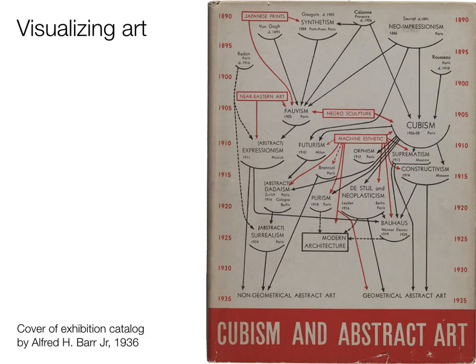Another example from data visualization history is this cover of an exhibition catalogue, which visualizes a range of art movements before and after cubism. It's a mixture of a directed network diagram blended with a timeline — the vertical axis is a timeline promising an overview of the main art schools and movements. It's somewhat controversial because certain art schools are missing, and it presents modern art as something clean and complete while neglecting influences from non-western parts of the world. But it's still quite a classic representation.